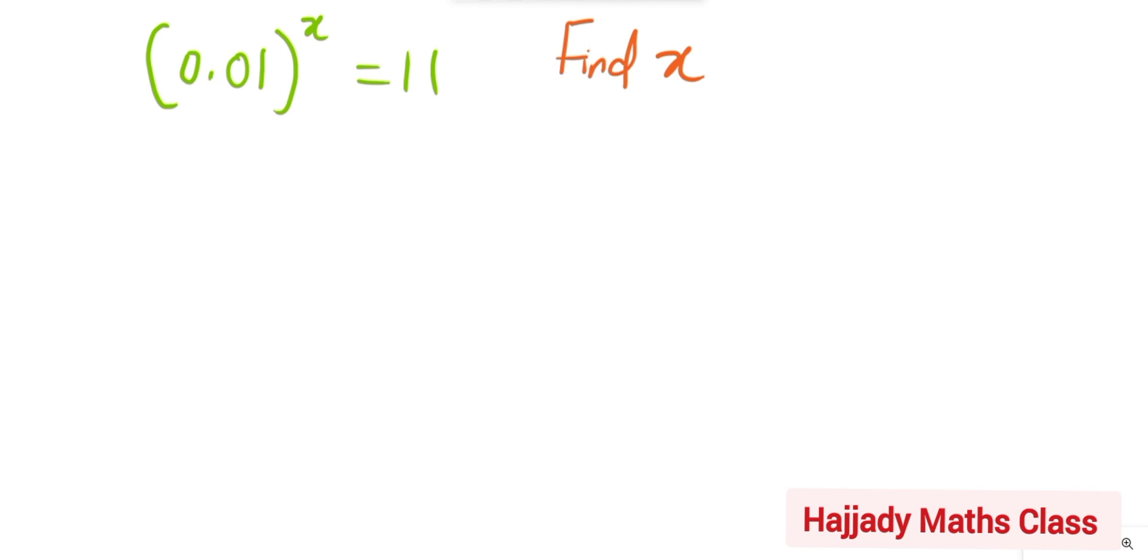Today we shall be solving this Olympiad math question. Here we have (0.01)^x = 11, and the first thing we are going to do is apply the law of logarithms.